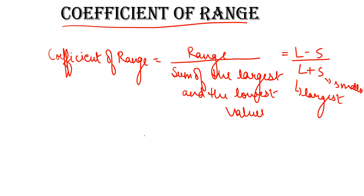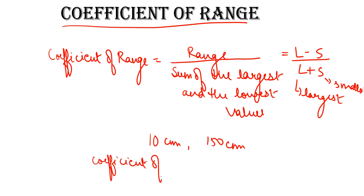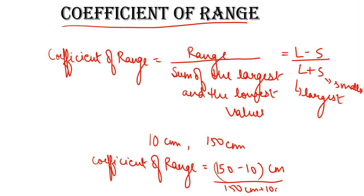Using our previous example with the lowest value of 10 centimeters and the highest value of 150 centimeters, the coefficient of range is 150 minus 10 upon 150 plus 10, which gives 140 centimeters upon 160 centimeters. The centimeter units cancel out, giving us a pure ratio with no units. So whenever we need to compare distributions with different units, we use the coefficient of range formula.